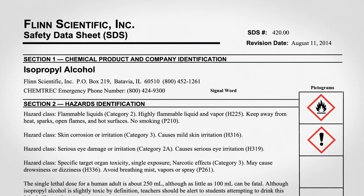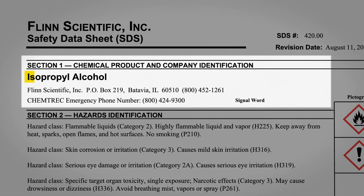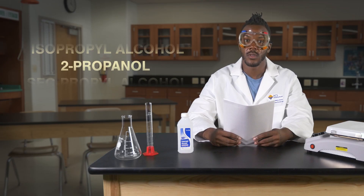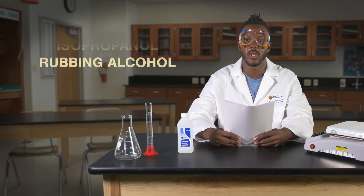All Safety Data Sheets have the same 16-section format. The first section identifies the chemical and also gives the name and address of the manufacturer. Chemicals are known by different common and formal names, so if you're unsure about which chemical you're using, check to make sure the name of the chemical on the SDS matches that on the container.